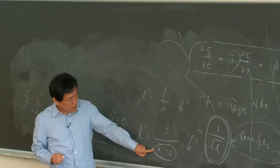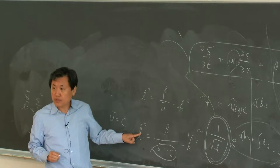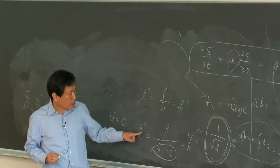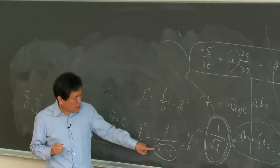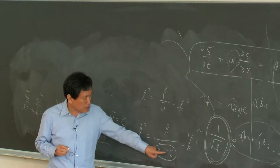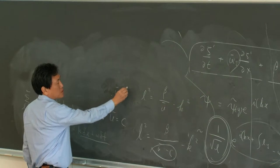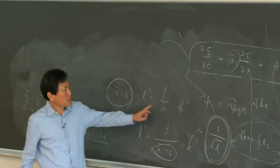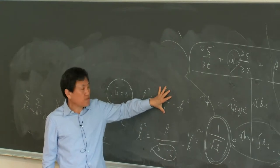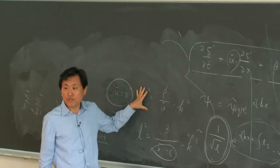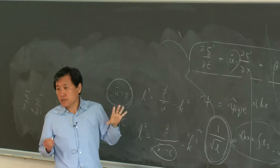If this number equals zero, then L is infinity, so the solution breaks down when ū equals C. For the stationary wave case, ū equals zero is the critical latitude — this number becomes infinity, so L is infinity.